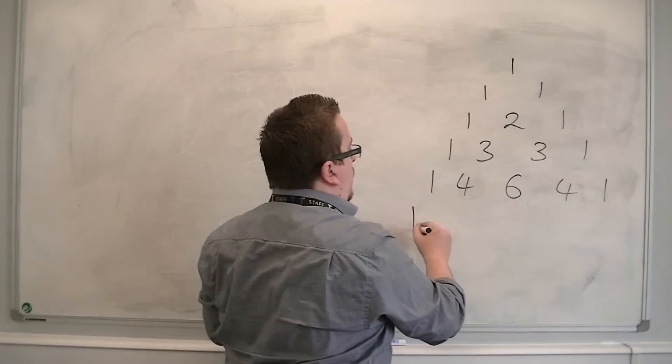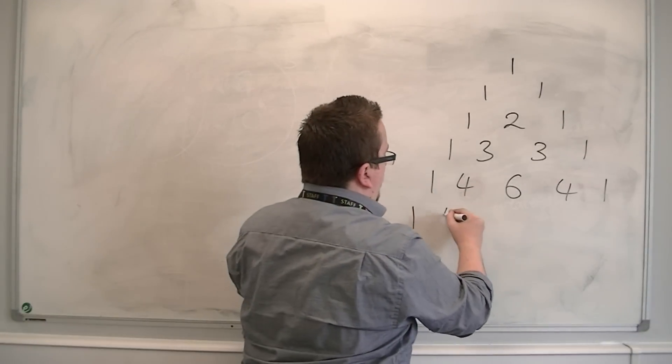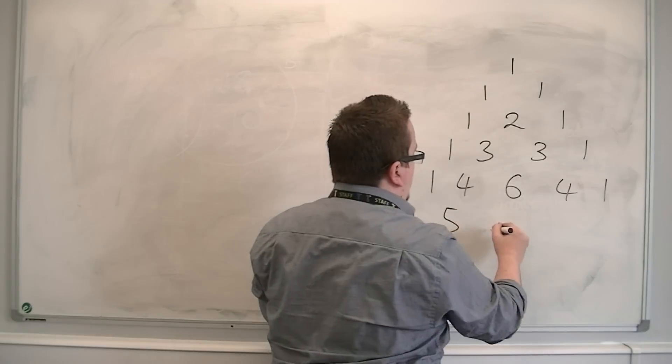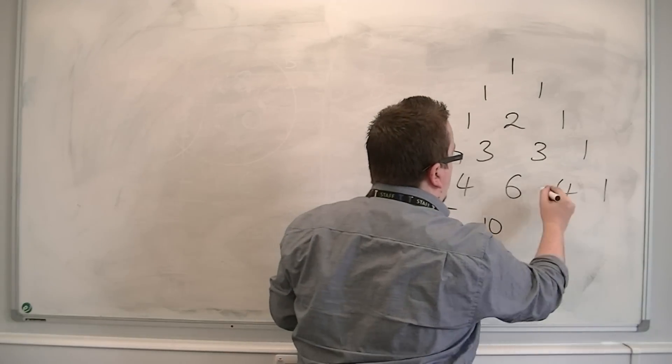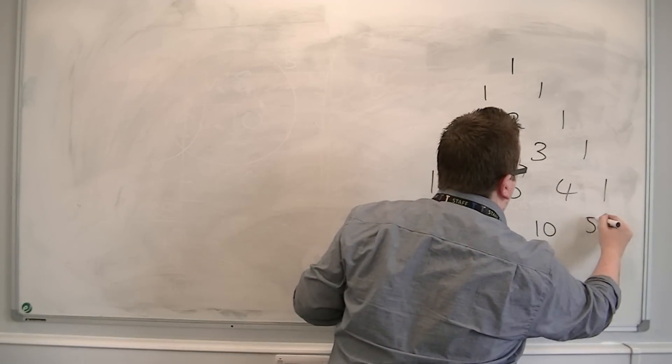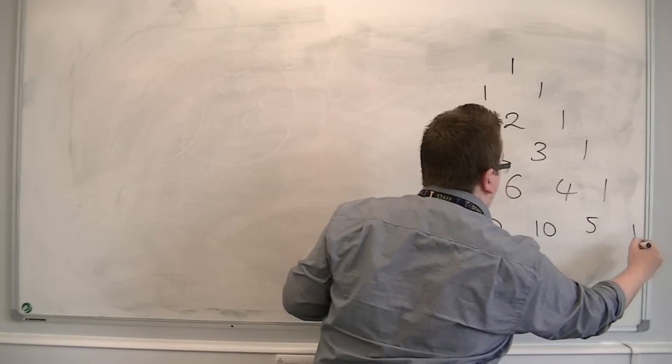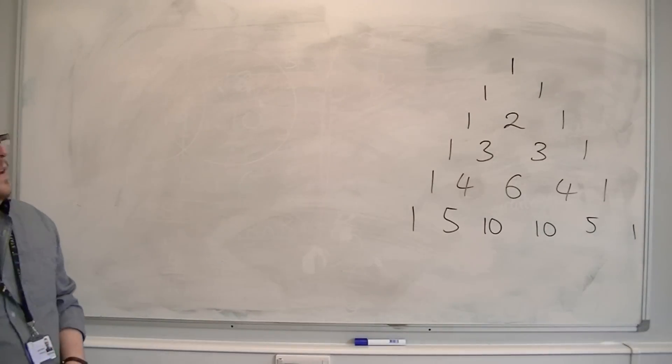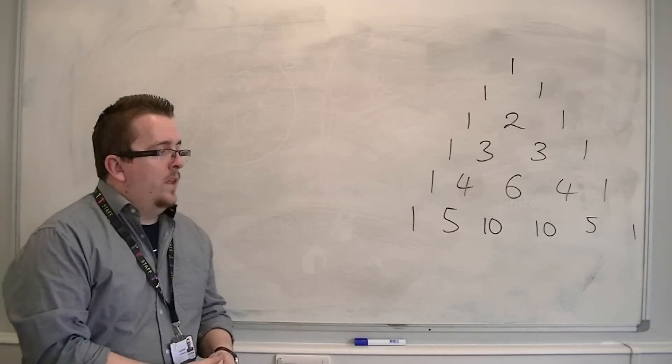So the next row would be one, five, ten, ten, five, one.